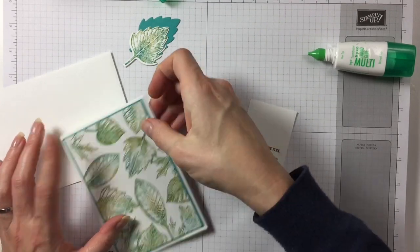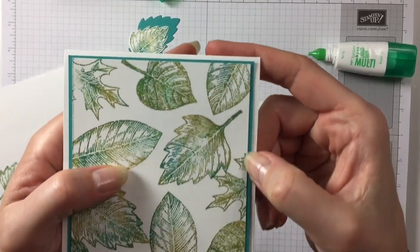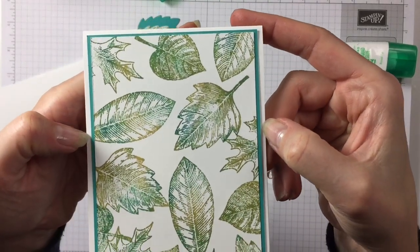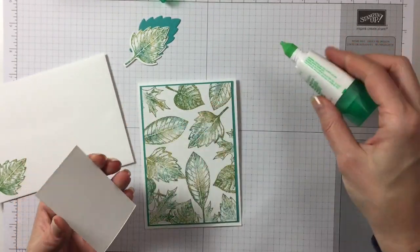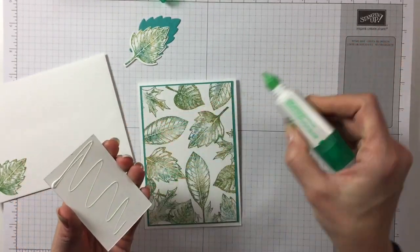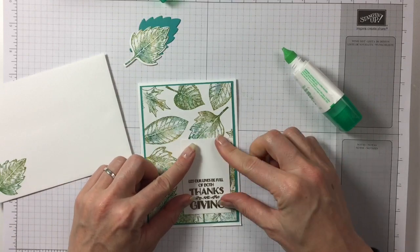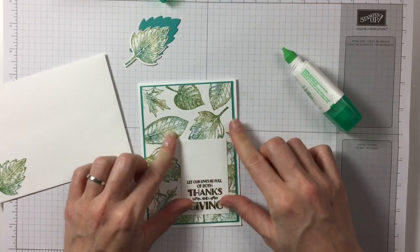Then we glue this bit on. And I don't know whether you can see, but I've only taken a small edge here. This is a bigger edge. This is a smaller edge. So there's only a hint of Bermuda Bay coming through. Then here, I like this to be like that.